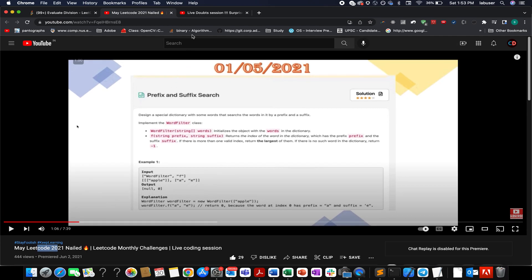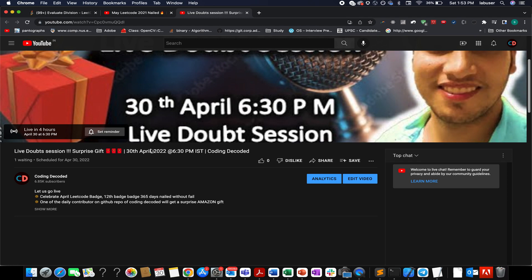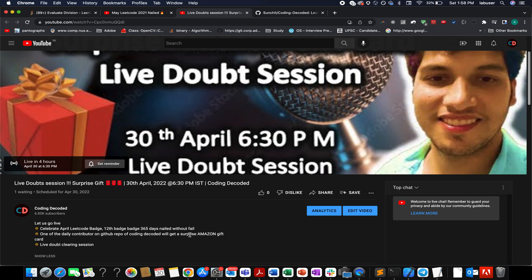There's another announcement I'd like to make. I'm going live today. The agenda for this live session is to celebrate the achievement. This is our 12th badge, 365 days without fail is a big achievement. I'll be giving away a surprise Amazon gift card to one of the daily contributors of Coding Decoded GitHub repo who solved all questions for March 2022. I'll be going over your doubts in this live session. I'm pretty excited and hope you guys will join. Looking forward to seeing all of you there.